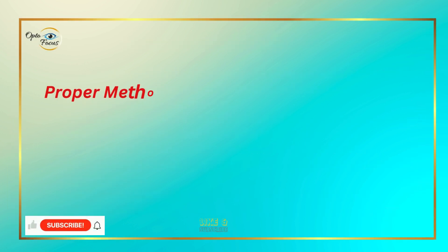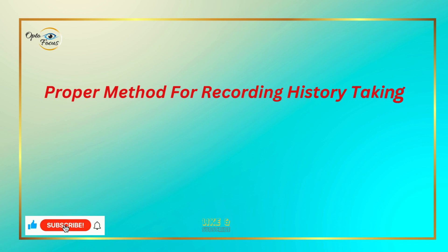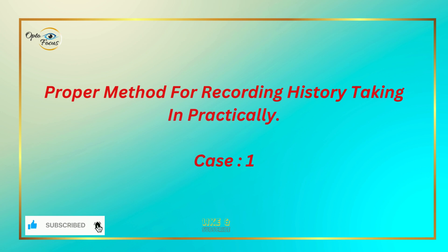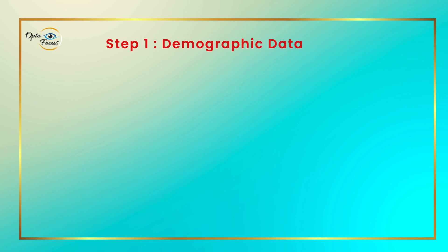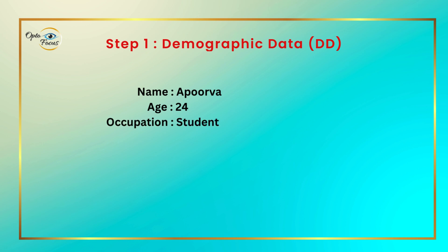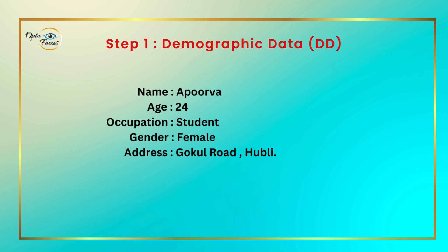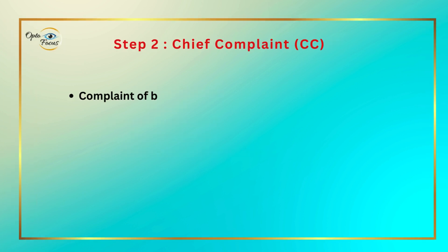Proper method for recording history taking in practice. Case 1. Step 1 — Demographic data: Patient name: Apoorwa. Age: 24 years. Occupation: Student. Gender: Female. Address: Gokul Road, Hubli. Step 2 — Chief complaint: Complaint of blurring of distance vision in both eyes since 4 months.